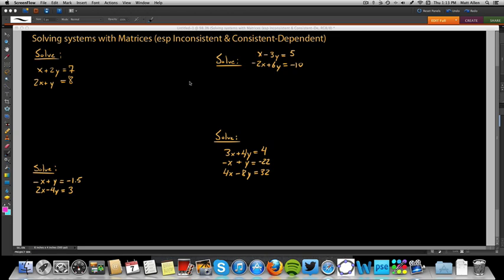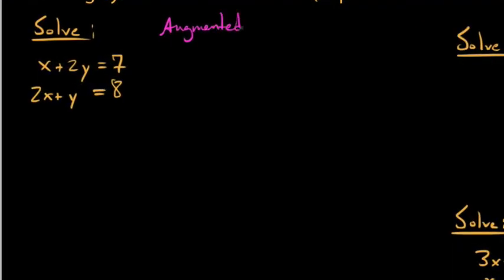We're going to go quickly through this. Throughout this entire video, we're going to be taking the system and rewriting it as what we call an augmented matrix. An augmented matrix is a matrix that contains all of our coefficients of our variables and our solutions on the right.